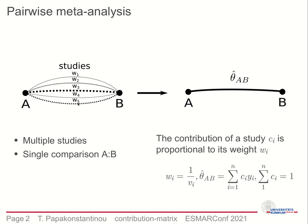The summary effect, theta hat, is the weighted sum of individual study effects. The contribution of each study is its weight, normalized by the sum of the weights, and it sums up to one.